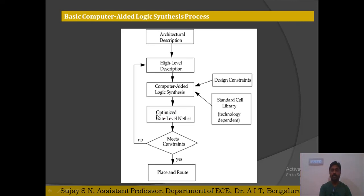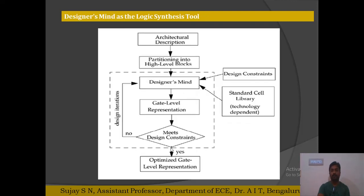The output is an optimized gate level netlist, and again we check whether it meets the constraints. If not, we can change the RTL representation itself and redo the logic synthesis process. Once it meets the constraints it goes to place and route. The designer no longer needs to worry about the gate level netlist conversion — only about the RTL.